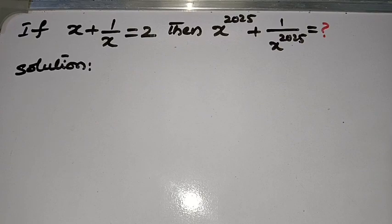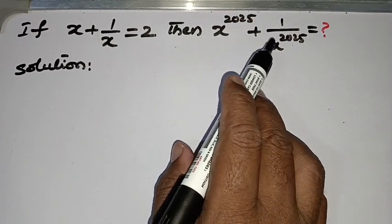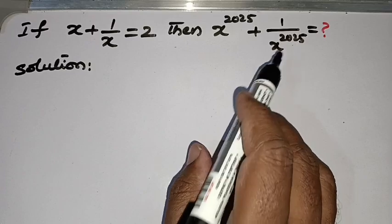x plus 1 by x is equal to 2 is given. Then we have to find the value of x to the power of 2025 plus 1 by x to the power of 2025.